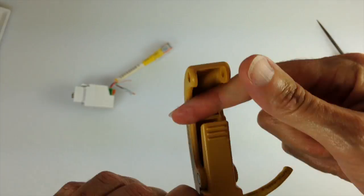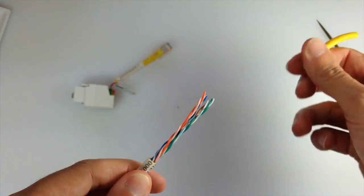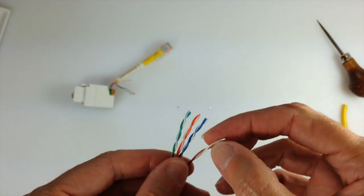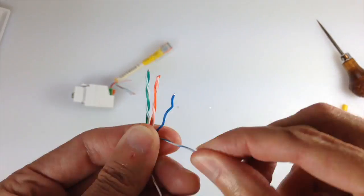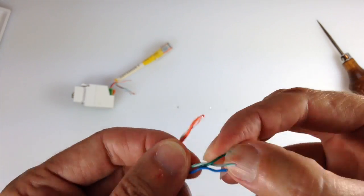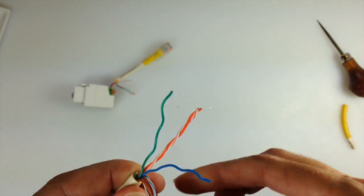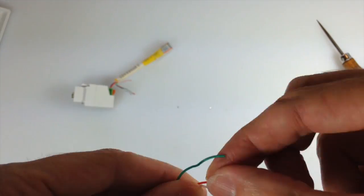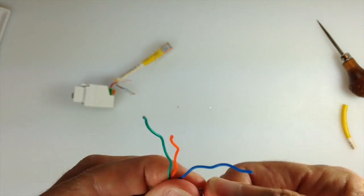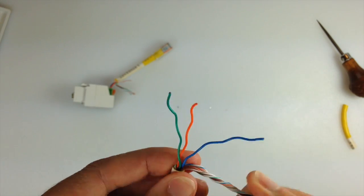Strip the jacket off of the cord. Separate out the solid colored orange, green, and blue wires. Take their striped counterparts and then the brown and brown white wire and twist those together and put them out of the way. We won't need those.